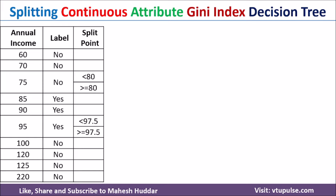Once that is done, we need to select the split point. If you look at the labels — 'no' and 'yes' — there is a change from one label to another, from 'no' to 'yes.' This means there is a split point between these two values: 75 and 85. The average of 75 and 85 is 80. So one split point will be less than 80 and the other will be greater than or equal to 80.